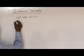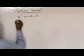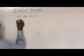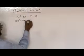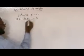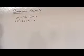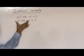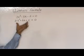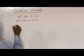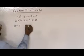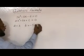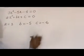We have the standard quadratic equation Ax² + Bx + C = 0. Comparing this with our equation, we get A = 3, B = -5, and C = -6.